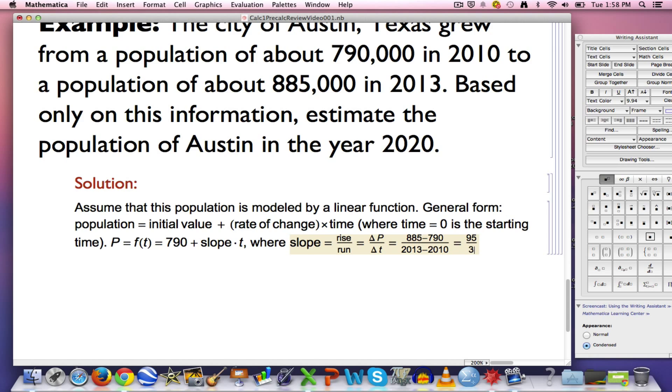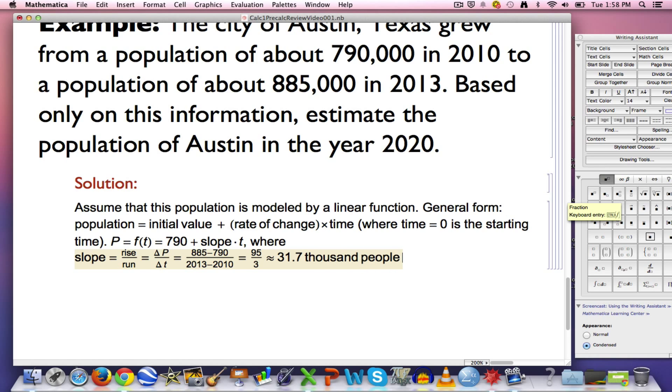Hopefully you can do that in your head, that's going to be 30, let's see, 31.6 repeating, approximately 31.7 thousand people per year. It's important to put the units in there. This is a ratio, that's a rate of change. The units are going to be the units of the quantity in the top, divided by the units of the quantity in the bottom. 31.7 thousand people per year, that will be the rate of change, that will be the slope.